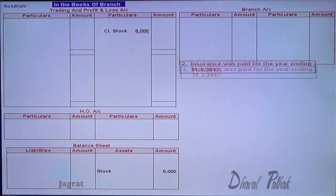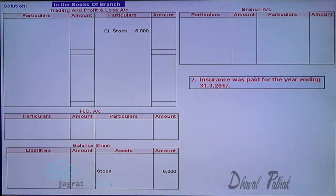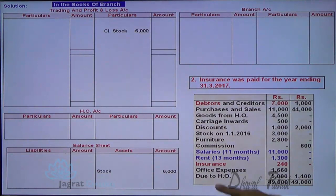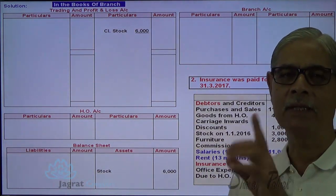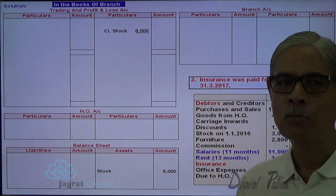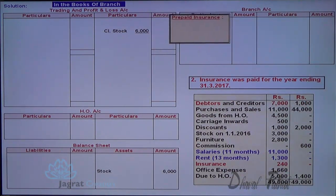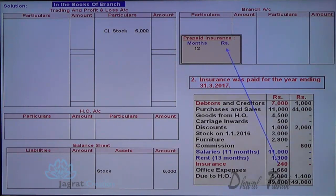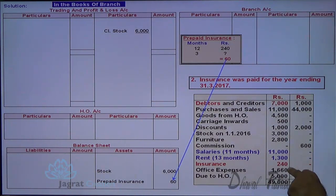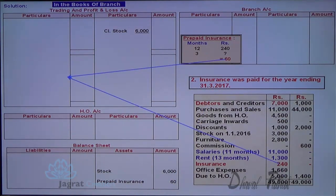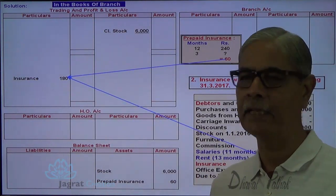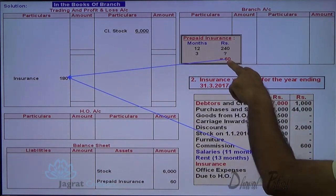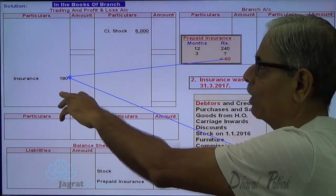The second adjustment: insurance was paid for the year ending 31st December 2017. The total insurance paid is 240 for 12 months, so 3 months is prepaid. Prepaid insurance = 240 ÷ 12 × 3 = 60. Prepaid insurance of 60 will appear on the balance sheet asset side, and the insurance expense debited to profit and loss account will be 240 minus 60 = 180.